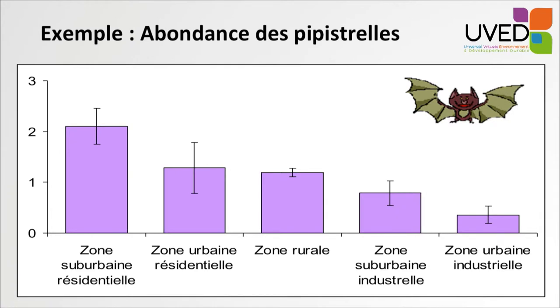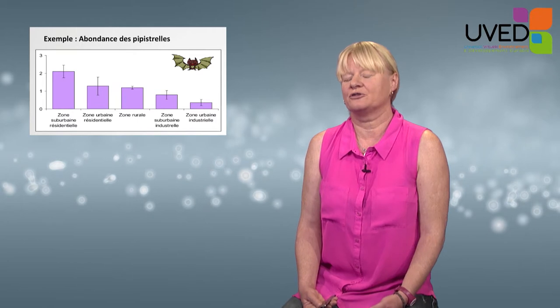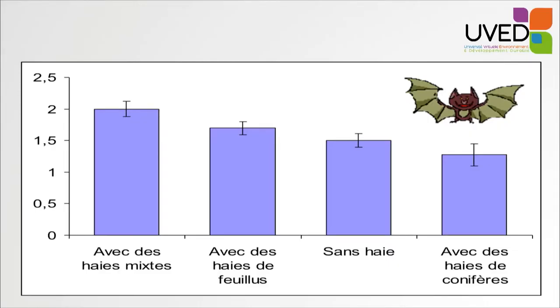Regarding other species such as bats, we find more bats in areas with suburban gardens or residential areas rather than in industrial areas which are highly urbanized. Similarly, the quality of habitats in those spaces — for instance, the quality of the hedges — has a strong impact on the presence and number of bats. When the hedges are mixed or made of deciduous trees, there are more bats than in places where the hedges are made of conifers.